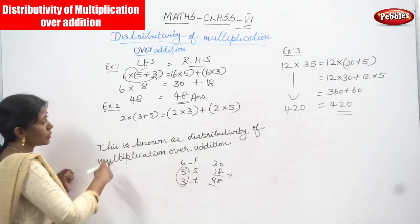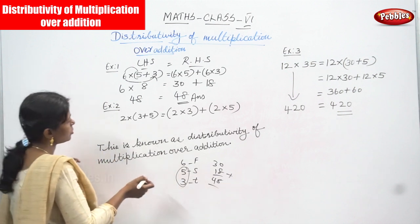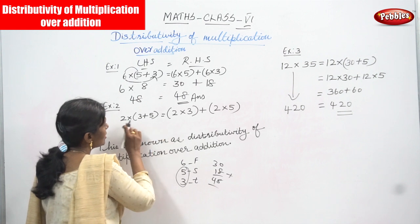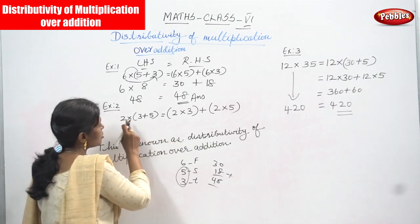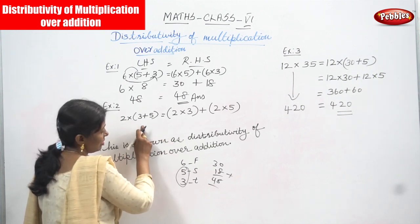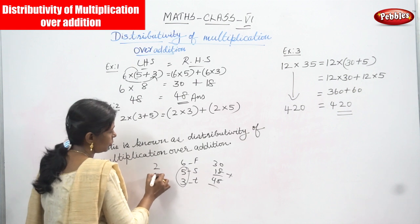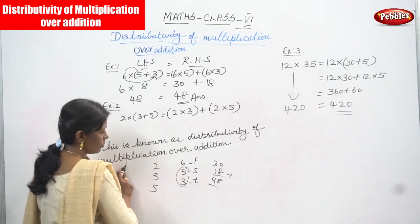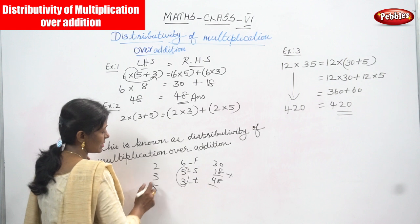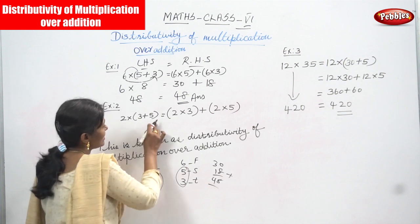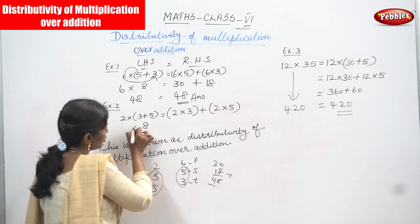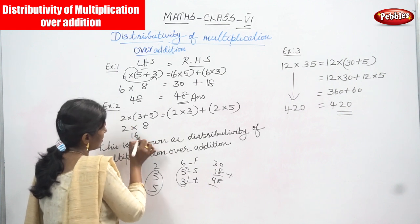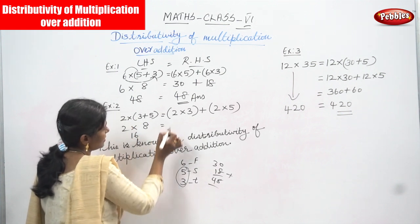The next example is 2 into 3 plus 5. First, solve the bracket: 3 plus 5 equals 8. There are three numbers: 2, 3, and 5. Keep the first number outside and take the second and third numbers inside the bracket: 3 plus 5 equals 8. Then 8 into 2 gives you 16.